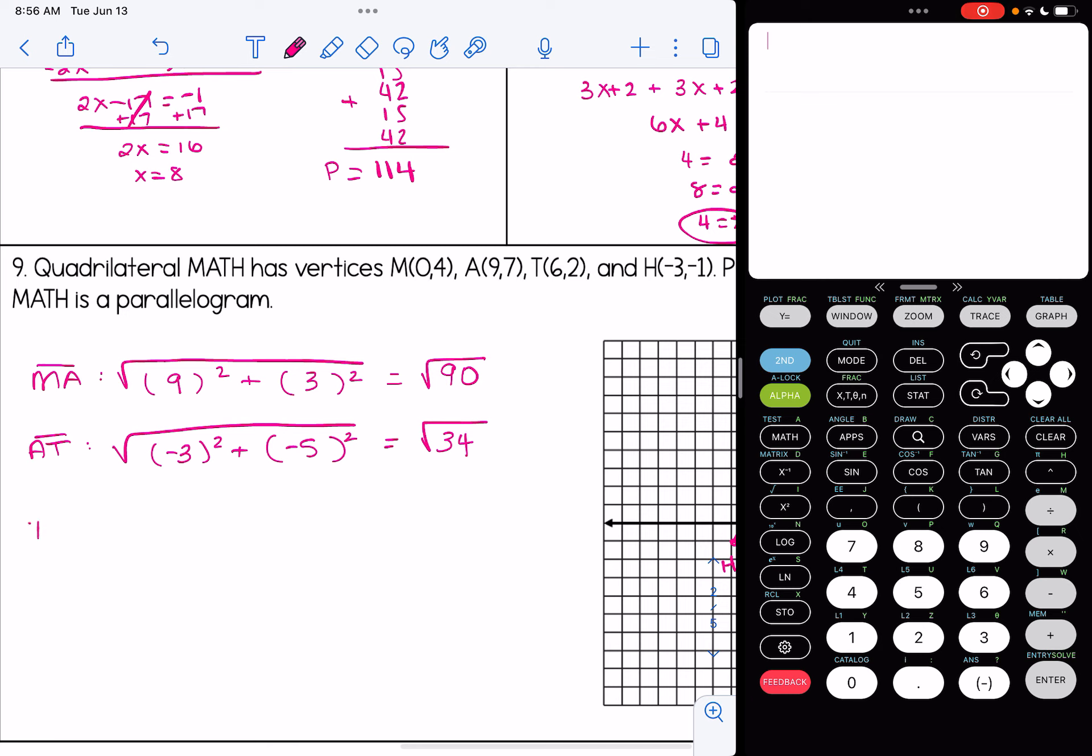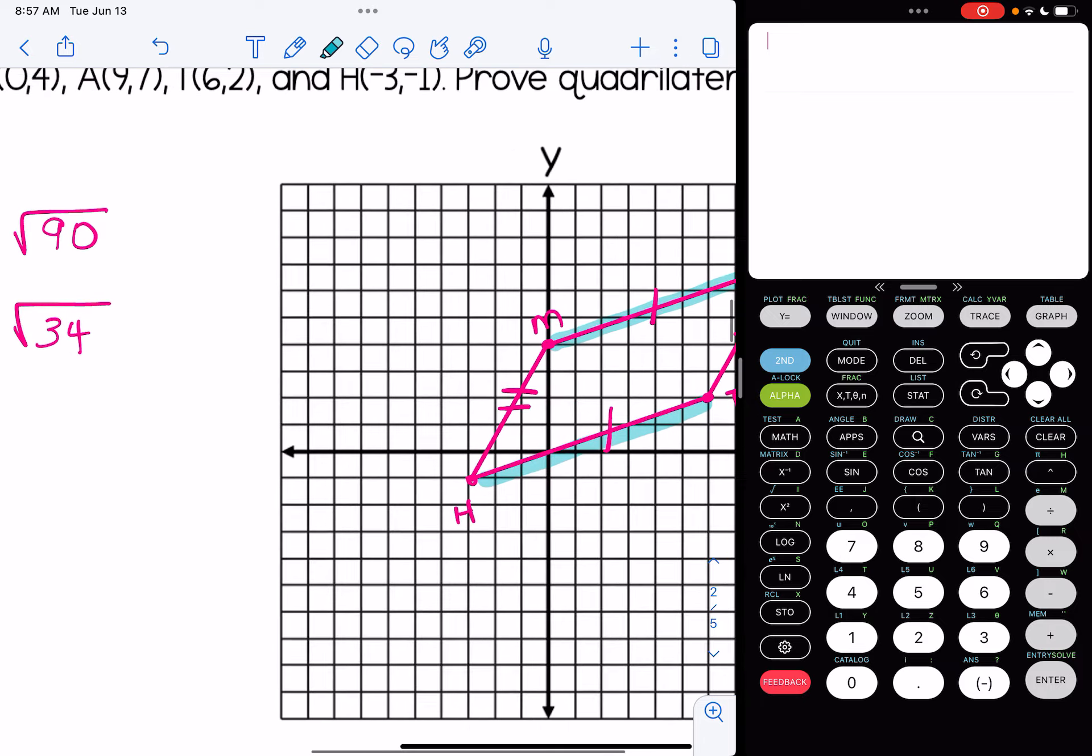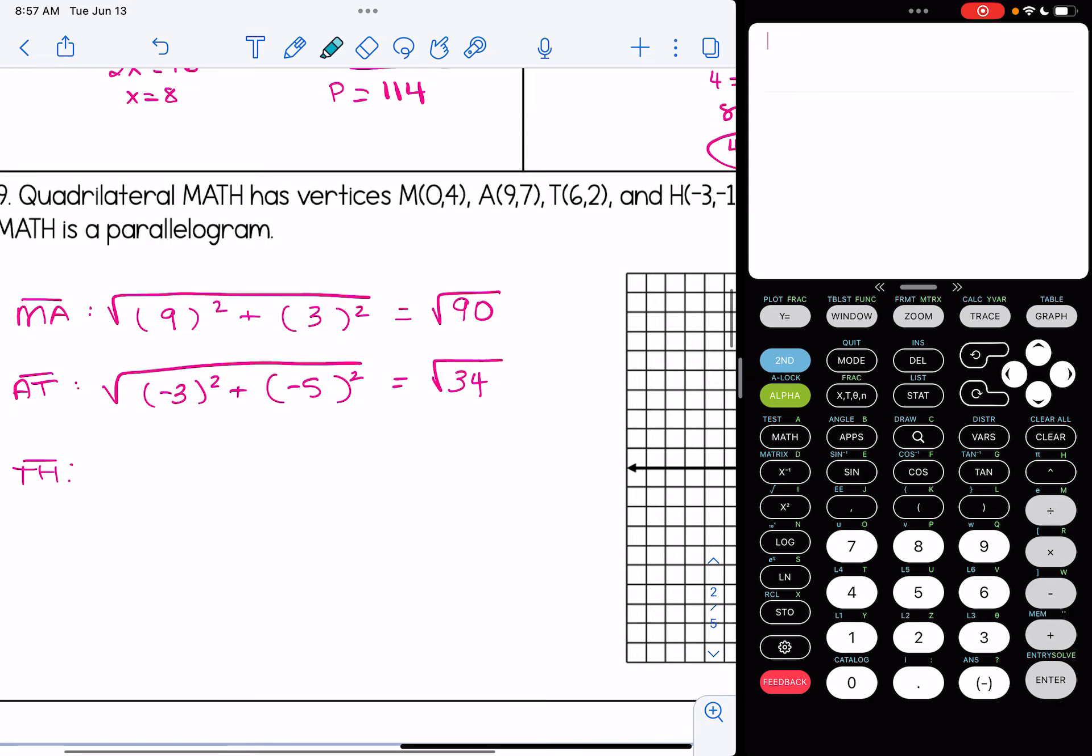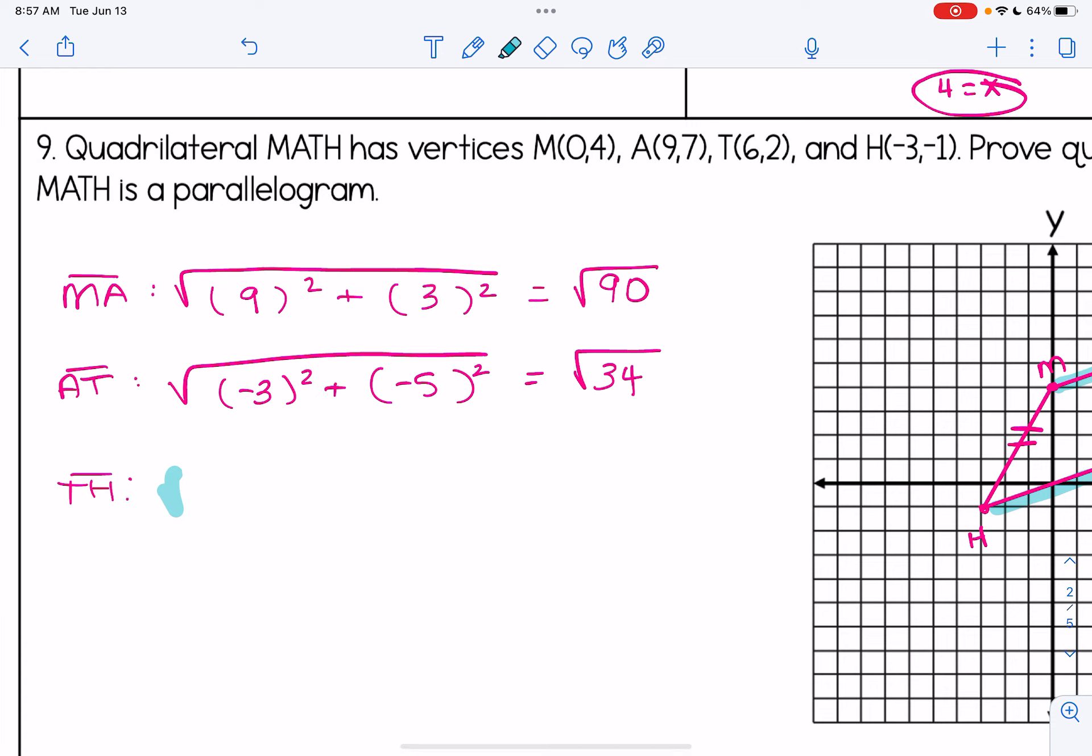Before I find TH, let's just go back to the picture here. TH, that's our bottom side here, and MA, we said should be congruent to one another. So if we're doing our math correctly, we already know MA is radical 90. TH should come out to be the same thing. I'm going to move this calculator out of the way here. So let's see what happens when we find TH. When I subtract the x values, I get negative 9. When I subtract the y values, I get negative 3. And sure enough, that will give me radical 90.